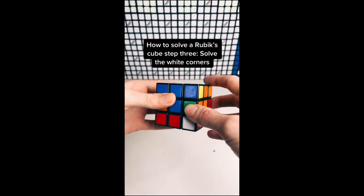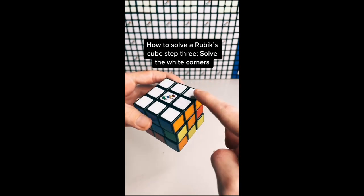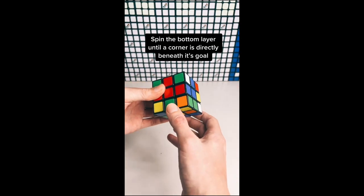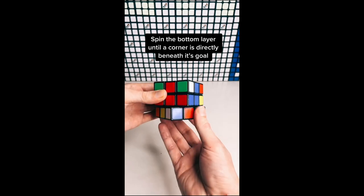How to solve a Rubik's Cube. Step 3: Solve the white corners. Spin the bottom layer until a corner is directly beneath its goal.